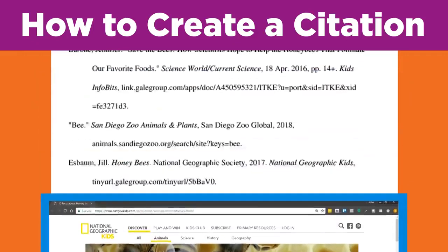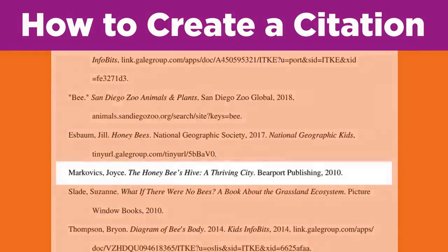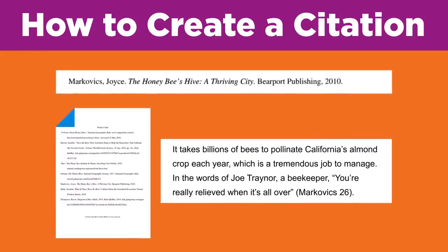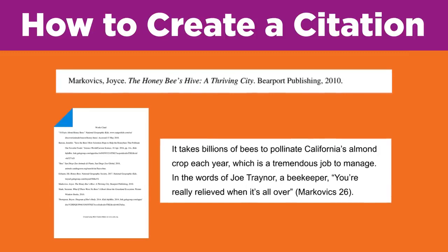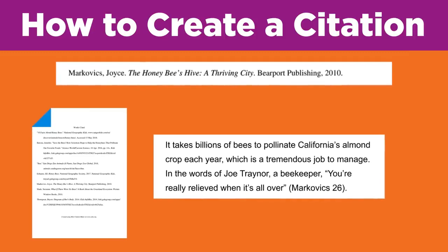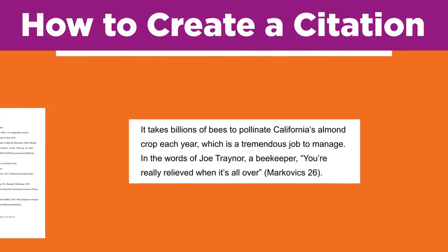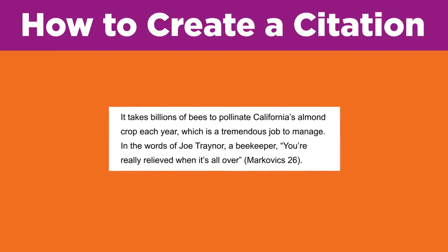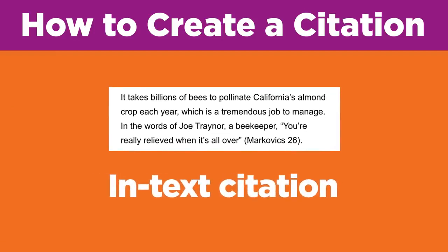All of the details for one source are called a citation. There are two places where you might include citations in your paper. Your teacher may require you to give credit for specific ideas and quotations within your paper — this is called in-text citation, and it lists the author's last name and the page number where the information was found in the source.